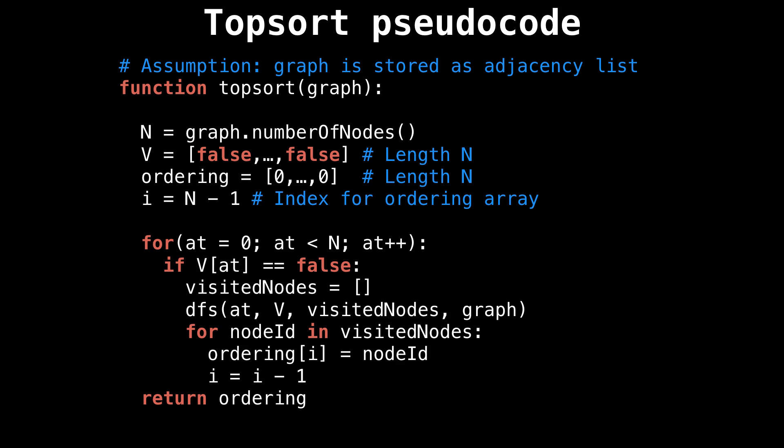The next array called orderings is the result that will be returning from this function. This is equivalent to the ordering at the bottom of the screen in the last slides. Associated with the orderings array is the index i, which tracks the insertion position of the next element in the topological ordering. As you have been seeing in the slides, we insert elements backwards, which is why i starts at n minus one.